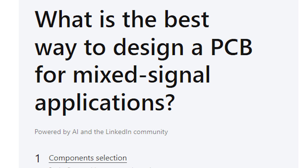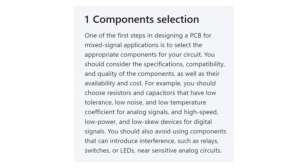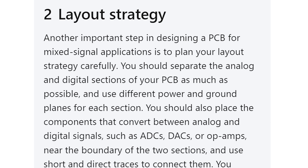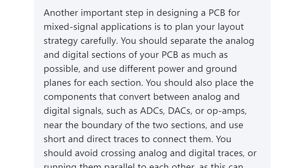Let's go to the next question: what is the best way to design a PCB for mixed signal applications? It actually starts with the exact same set of guidelines from the other article about noise. Section 2 is layout strategy — you should separate the analog and digital sections of your PCB as much as possible and use different power and ground planes for each section. I thought you were going to get it right this time. The rest is basically correct as long as you use a single ground plane for everything in the design.